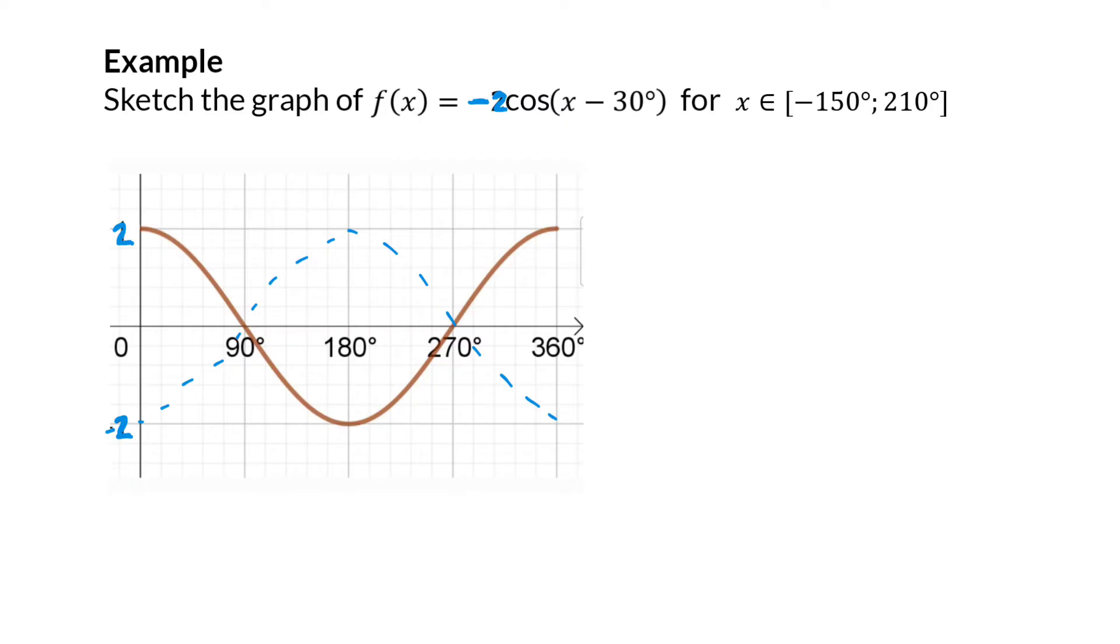And now we need to move this function 30 degrees. We've just seen that -30 means each coordinate will move 30 degrees in the positive direction to the right.